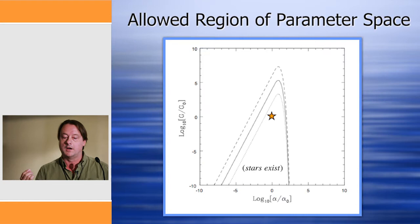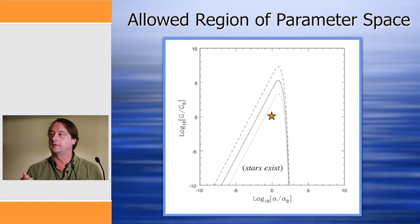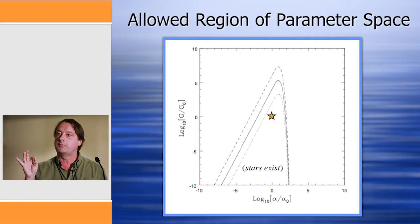Just focus on the solid line in this diagram. Everything below the solid line allows for working stars. Our universe is represented by the gold star in the middle. This parameter space varies alpha and G by 10 orders of magnitude in either direction, and the takeaway point is that there's a whole lot of real estate in parameter space with working stars — which is different than what a lot of the literature actually says.